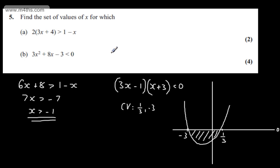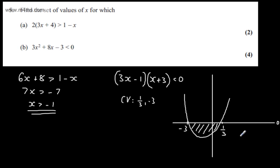So we can say the set of values of x for which 3x squared plus 8x minus 3 is less than 0 is that x is going to be greater than minus 3 yet in turn less than positive 1 third. So 4 marks in total for part (b).